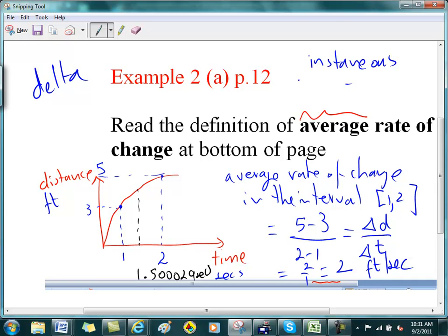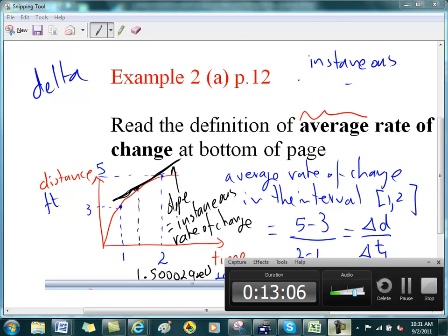For instantaneous, it turns out to be the slope of the line to the graph at this particular instance in time. So this should be really a tangent. I'm having a hard time drawing a tangent here. So remember, a tangent is a line that touches the graph only at one place. The slope of this line, the slope of that line, is equal to the instantaneous rate of change. All right, so that's it for P dot 2. Thank you.